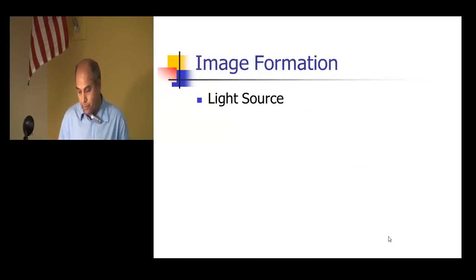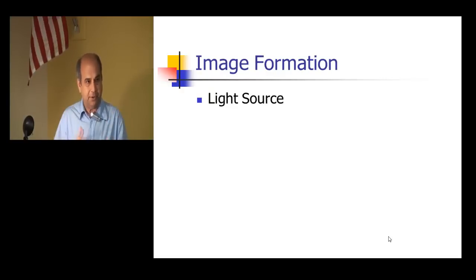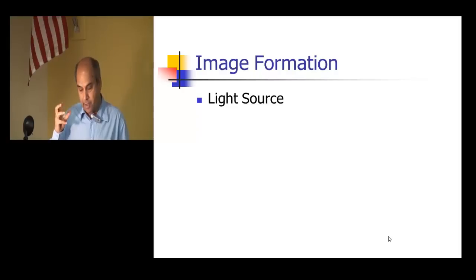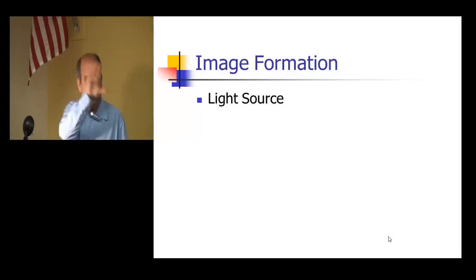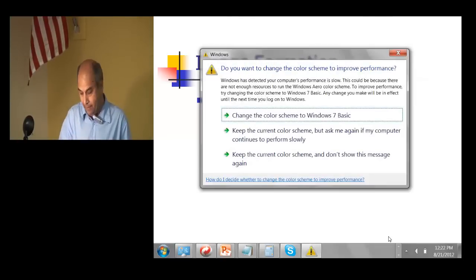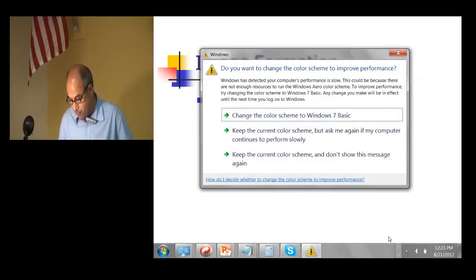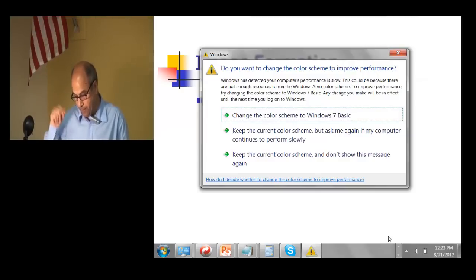If you look at the physics of imaging — how you take a picture and what are the important things which affect the picture you get — a very simple model is called the Lambertian model of image formation. It depends on the light source: where the light is. If there's no light, you cannot see the picture; it will be all dark. The light source can be the sun or a lamp.